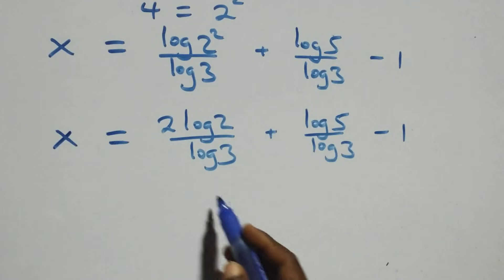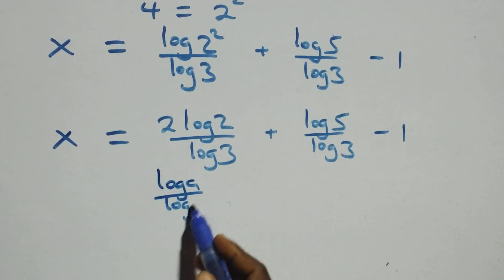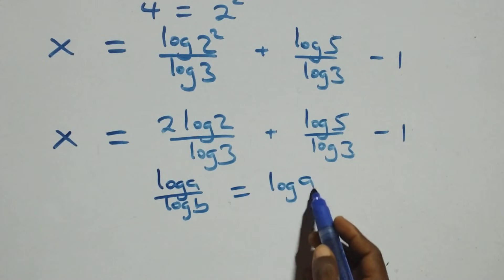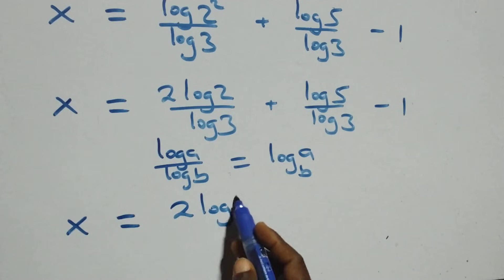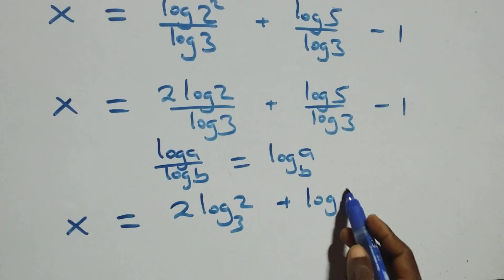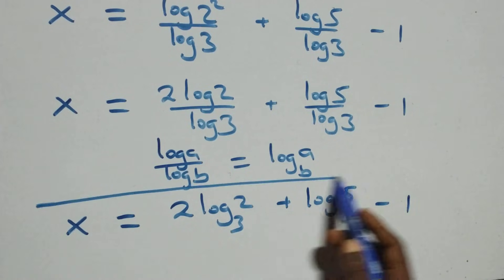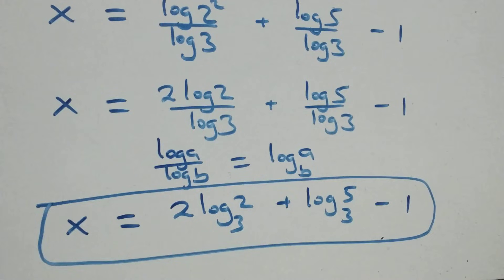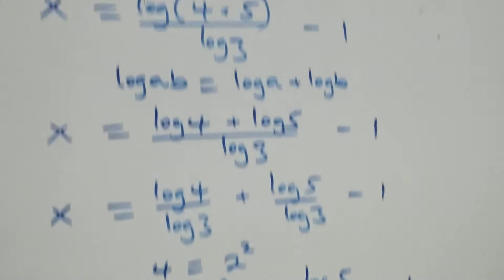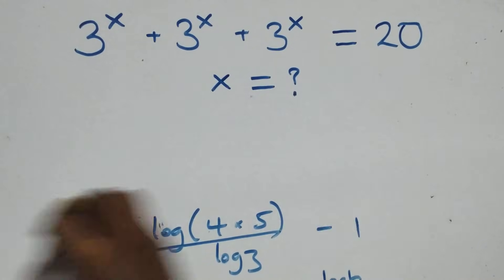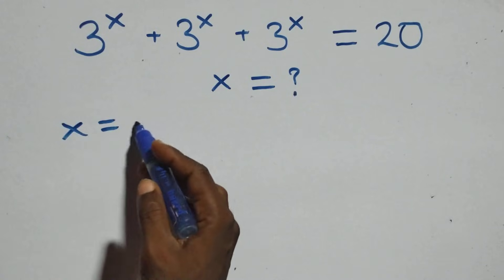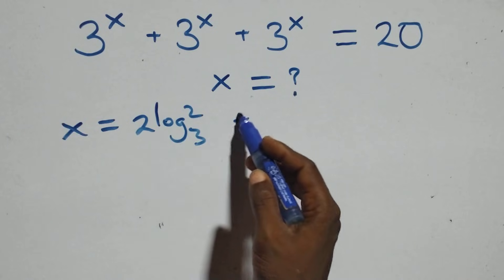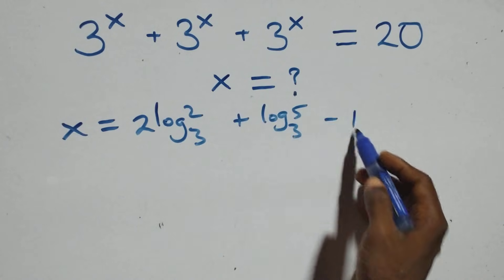We apply the change of base rule here. Applying change of base to this problem, we obtain x equals to 2 log₃2 plus log₃5 minus 1.